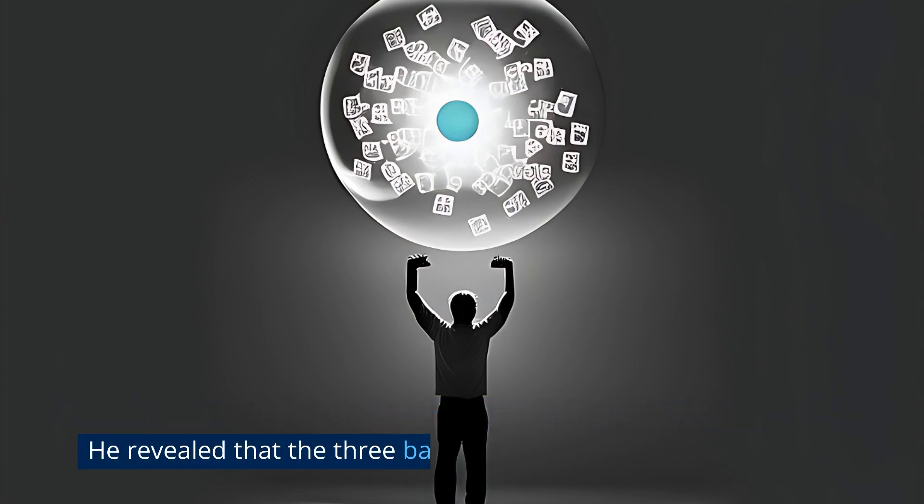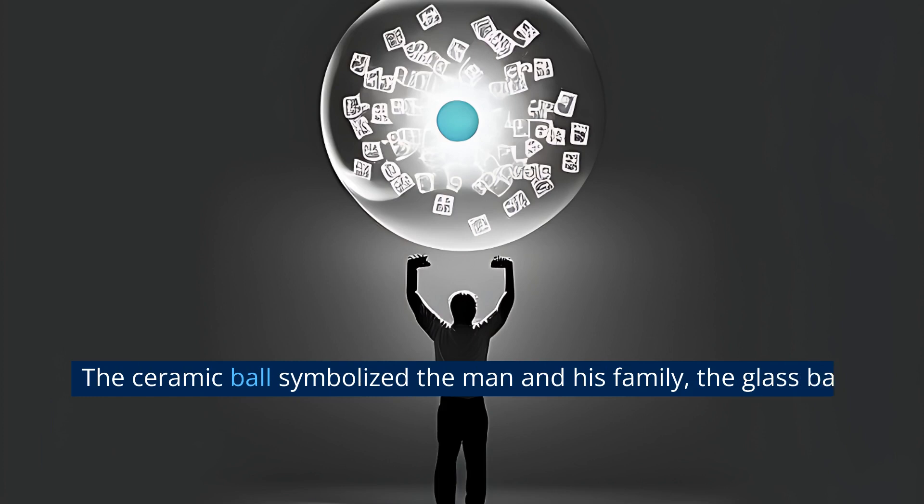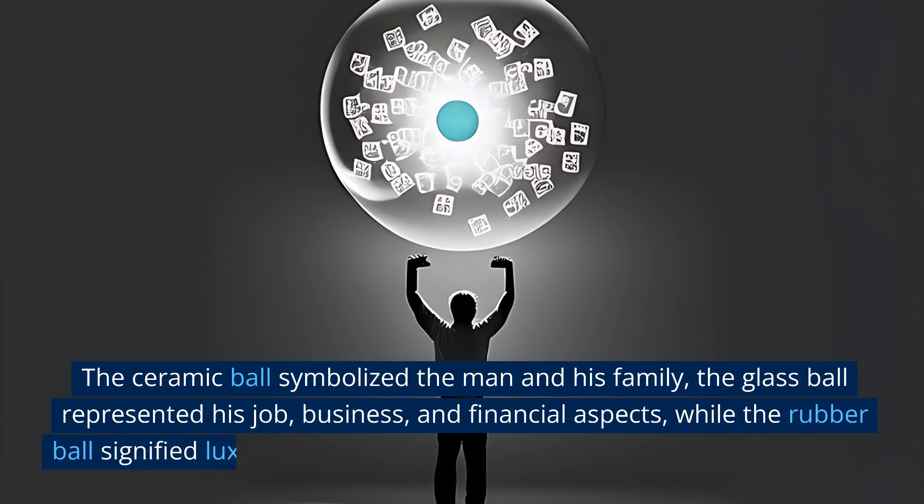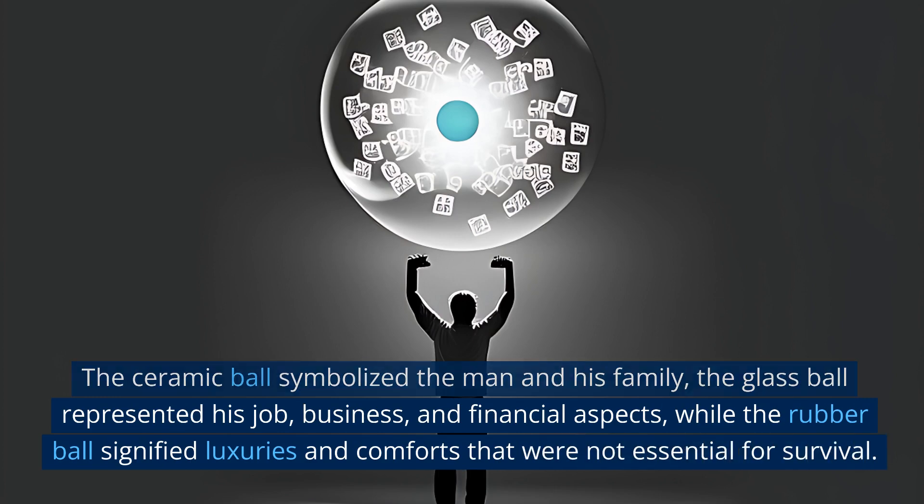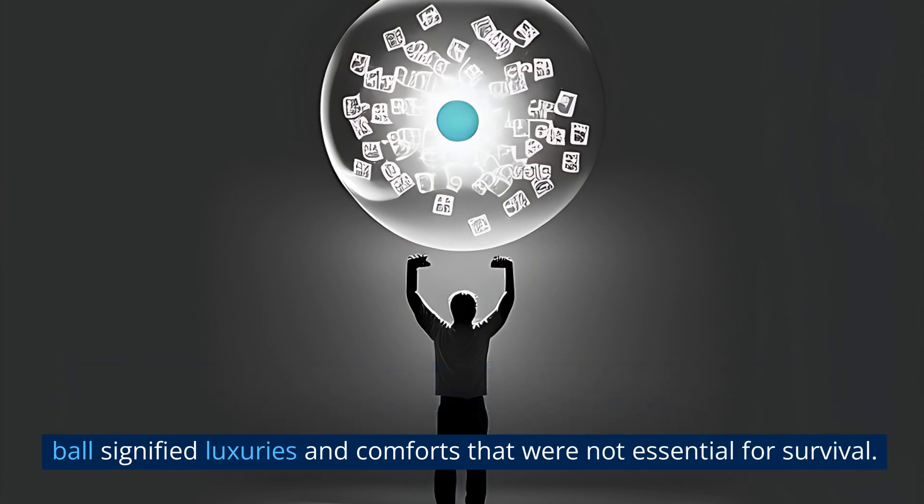He revealed that the three balls represented the priorities of life. The ceramic ball symbolized the man and his family. The glass ball represented his job, business, and financial aspects. While the rubber ball signified luxuries and comforts that were not essential for survival.